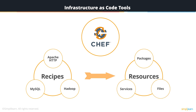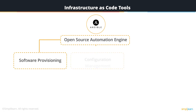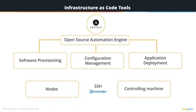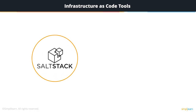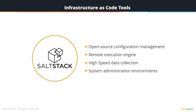Ansible is an open-source automation engine that automates software provisioning, configuration management, and application deployment. There is a single controlling machine where orchestration begins, and nodes are managed by the controlling machine over SSH. The controlling machine describes the location of nodes through its inventory. Salt is an open-source configuration management software and remote execution engine supporting the infrastructure-as-code approach to deployment and cloud management. It originated from the need for very high-speed data collection and execution in the system administration environment.